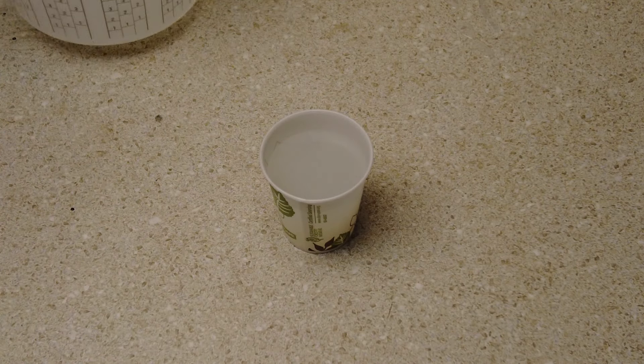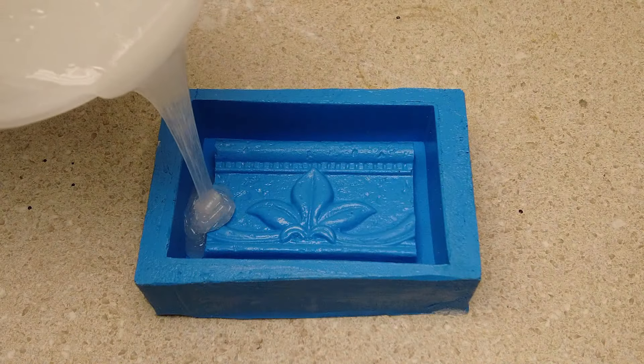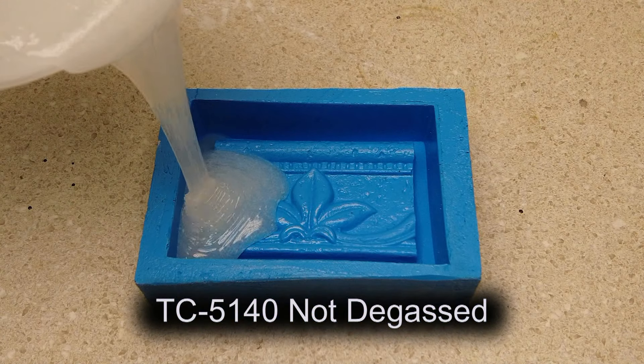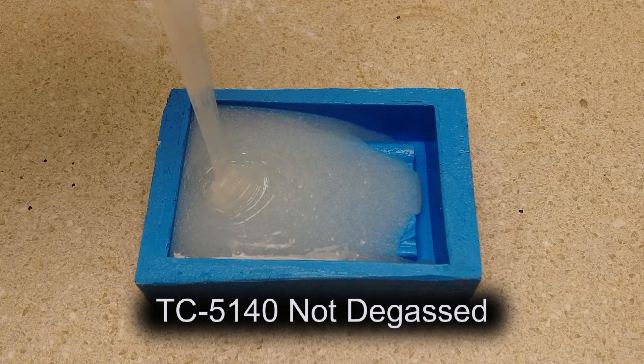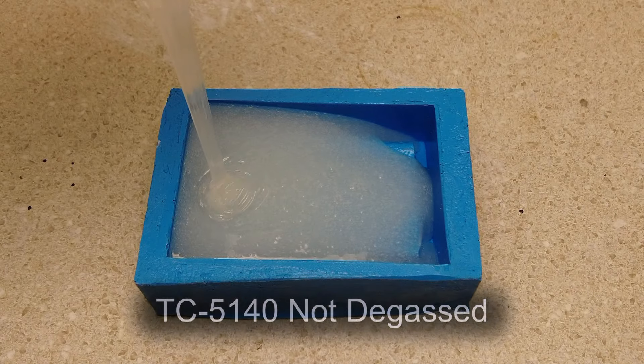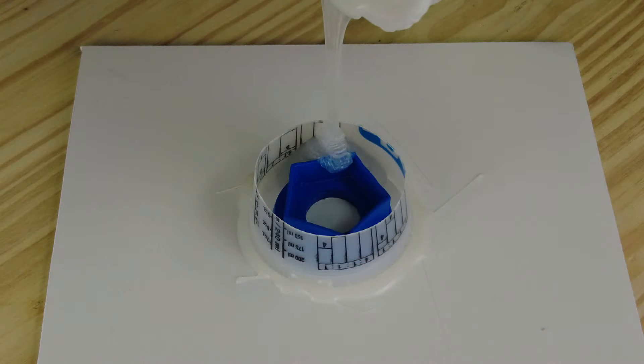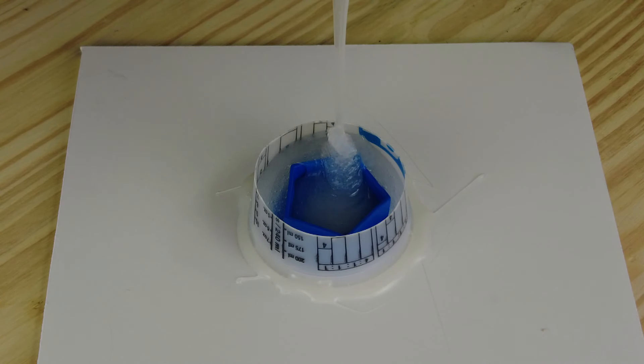Now, I didn't show this part, but I mixed up another batch and I did not vacuum degass it. So there's really nothing to show there, but this is 5140 not vacuum degassed. So 5140 not degassed, that's 6,800 centipoise. That does retain those bubbles if we don't make an effort to get them out. So you see those all through that as we're pouring both in that master mold and over that little mechanical part.